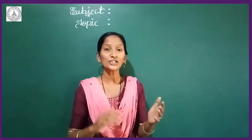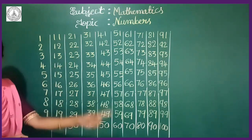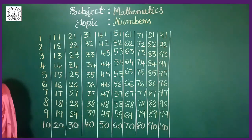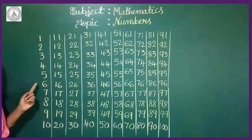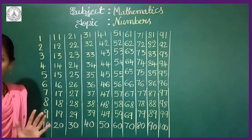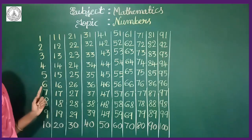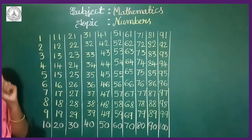In class one, already you learnt the numbers from 1 to 100. So these are the numbers from 1 to 100. See now: 1, 2, 3, 4, 5, 6, 7, 8, 9. From 1 to 9, these are the single digit numbers. Here is only one digit. So from 1 to 9, these are all single digit numbers.